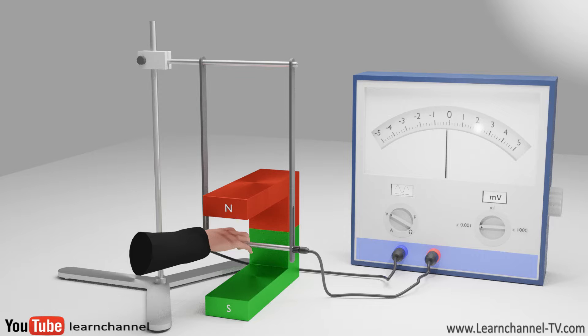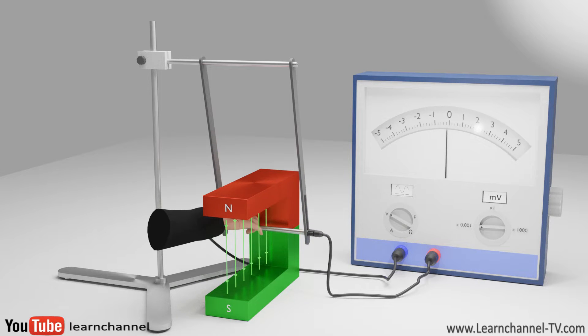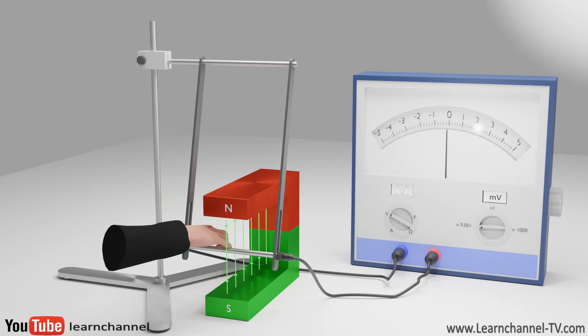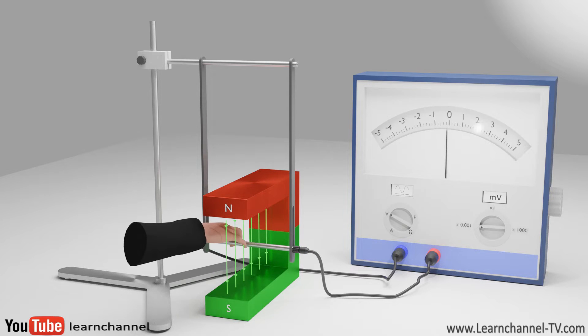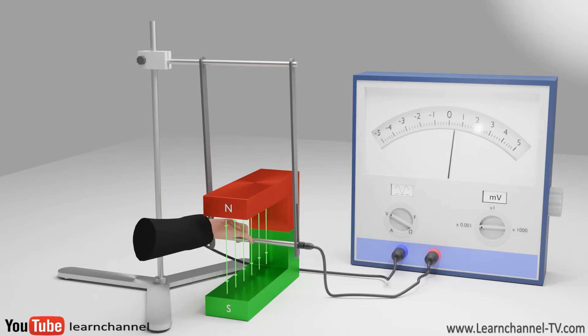In this experiment, you see a freely movable conductor bar within a homogeneous magnetic field. As long as this conductor rod is moving, the measuring device registers a voltage. The sign of this induced voltage depends, as you see, on the direction of movement.